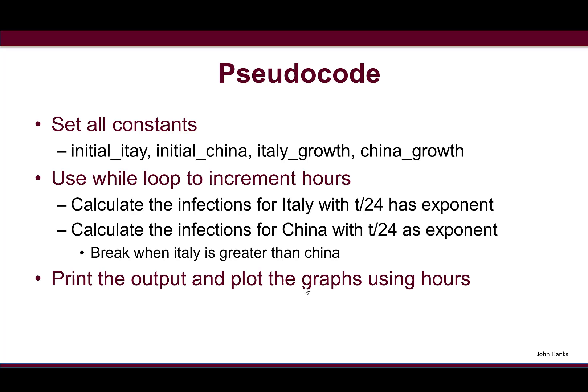Break when Italy is greater than China. We want to say when the infection rates for Italy are greater than or equal to China. If we just did Italy equals China with the double equal sign, these would have to be exactly the same before we set a break. We want to make sure the first moment Italy is above China, we use the greater than or equal sign to break our code. Finally, print the outputs and plot the graphs using hours.